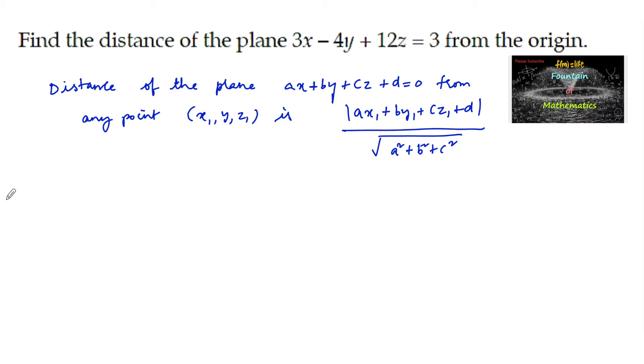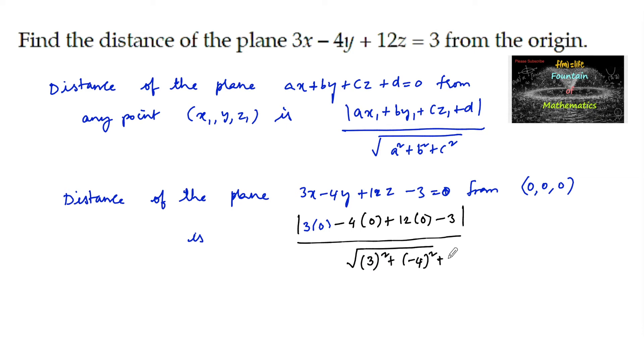So here, distance of the plane 3x - 4y + 12z - 3 = 0 from the origin is given by 3 times 0 minus 4 times 0 plus 12 times 0 minus 3, in modulus, upon the square root of 3² plus (-4)² plus 12².